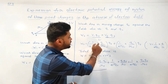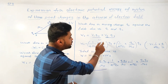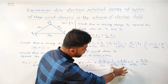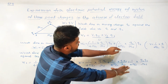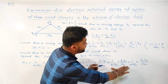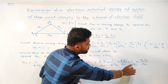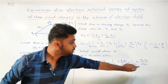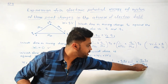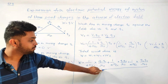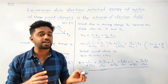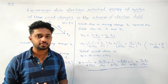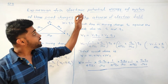W3 equals 1 upon 4 pi epsilon naught into Q1 Q3 divided by R13, plus 1 upon 4 pi epsilon naught into Q2 Q3 divided by R23. So total work done equals the sum of all three terms — this gives the total electrostatic potential energy of the system of three charges.